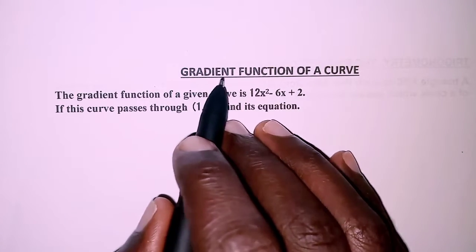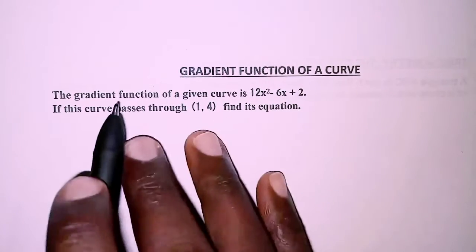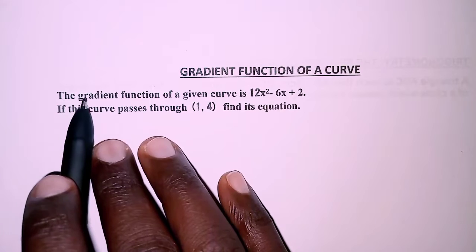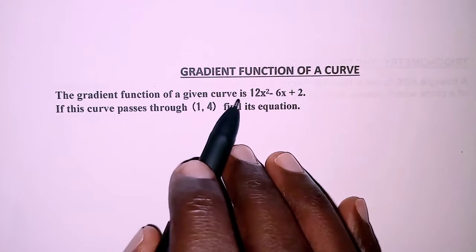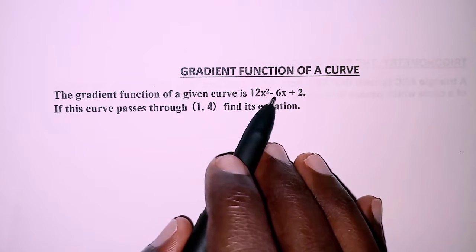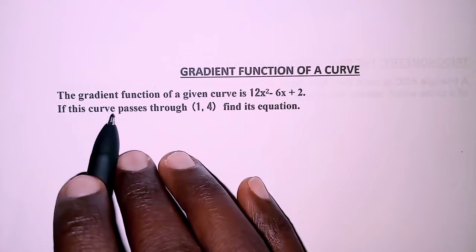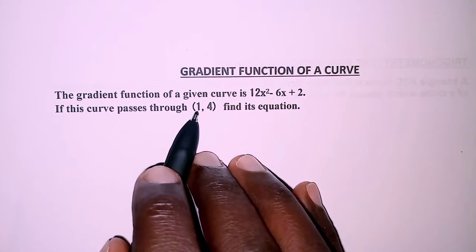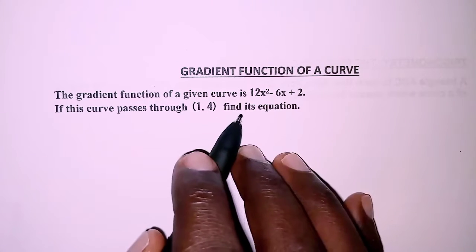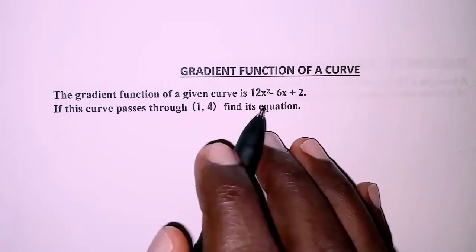The question today is about the gradient function of a curve. The gradient function of a given curve is 12x² - 6x + 2. If this curve passes through point (1, 4), find its equation.